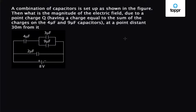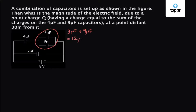So let's first simplify the circuit. We can see that the 3 microfarad and 9 microfarad capacitors are in parallel, so their equivalent capacitance will come out to be 3 microfarad plus 9 microfarad, which is equal to 12 microfarad. So we can replace the circuit by a 4 microfarad capacitor in series with a 12 microfarad capacitor.